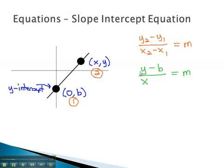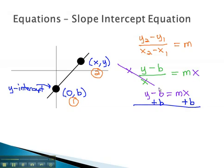What we will do with this equation is we will solve it to get the variable y all alone. We do this by first multiplying by x to clear the fraction. y minus b equals mx. Finally, to get the y alone, we will add b to both sides. y is equal to mx plus b.